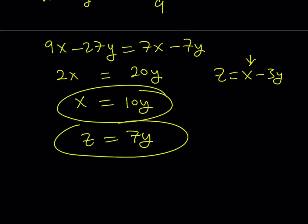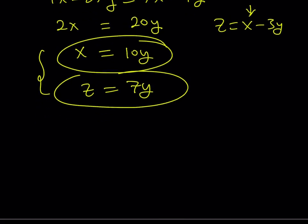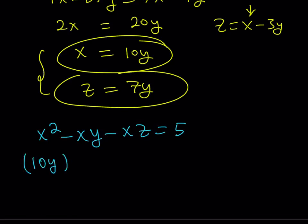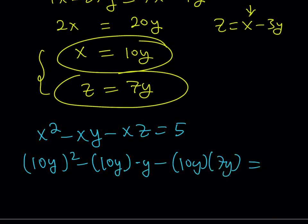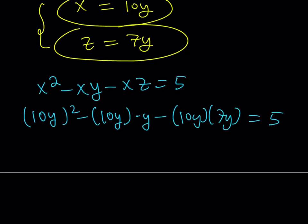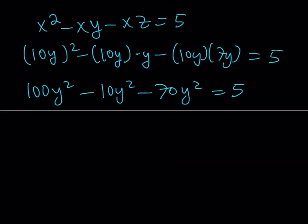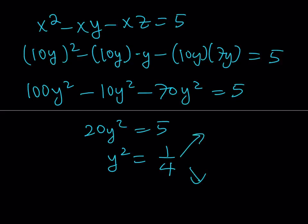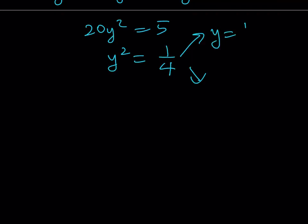Now I'll substitute into the first equation: x squared minus xy minus xz equals 5. Replacing x with 10y and z with 7y: (10y) squared minus (10y)(y) minus (10y)(7y) equals 5, which gives 100y squared minus 10y squared minus 70y squared equals 5. That simplifies to 20y squared equals 5. Dividing both sides by 20: y squared equals 1/4, giving two solutions: y equals 1/2 or y equals negative 1/2.